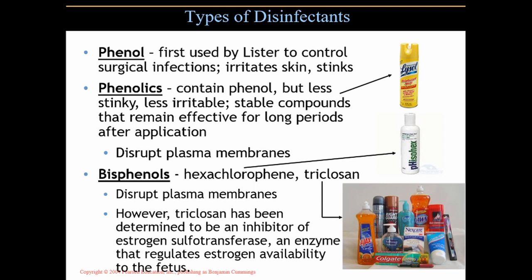Phenol is a compound that was first used by Joseph Lister in the 1800s. It was initially called carbolic acid, later changed to phenol. He used it to control infection at surgical sites and to prevent surgical wound infections. It did irritate the skin, and he would make a solution, dilute it, aerate it, and spray it onto the skin of the patient.